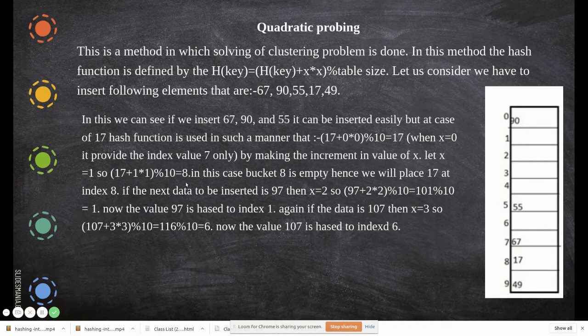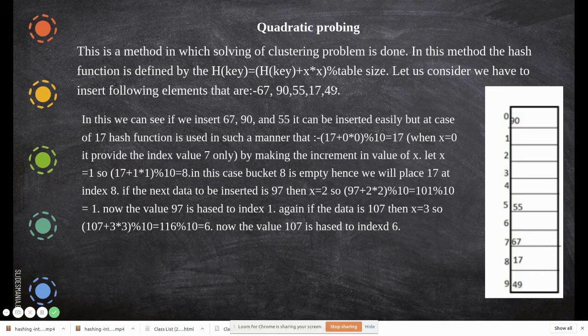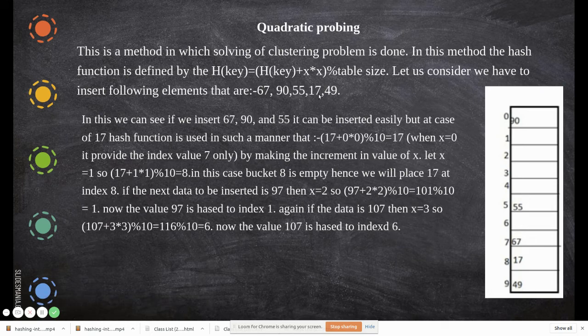In this case, 17 plus 1 is 18, so 18 mod 10 is 8. There you place it. Next comes 49. 49 mod 10 is 9, so it's placed at index 9.